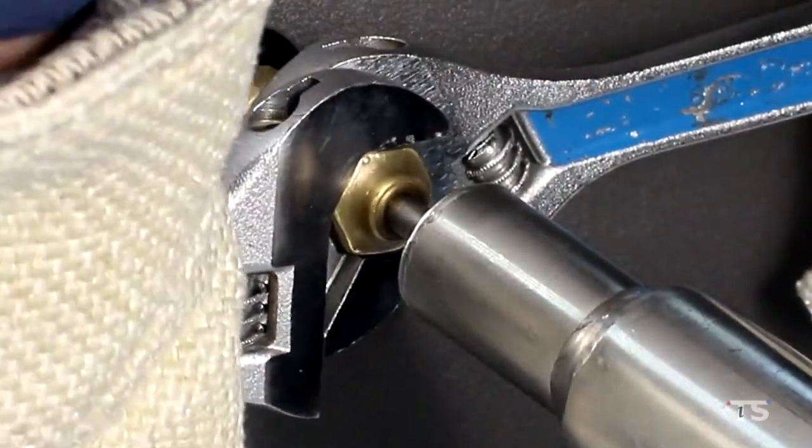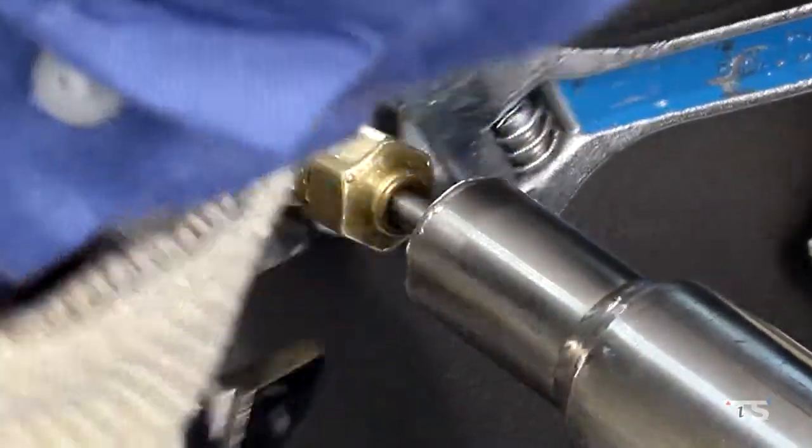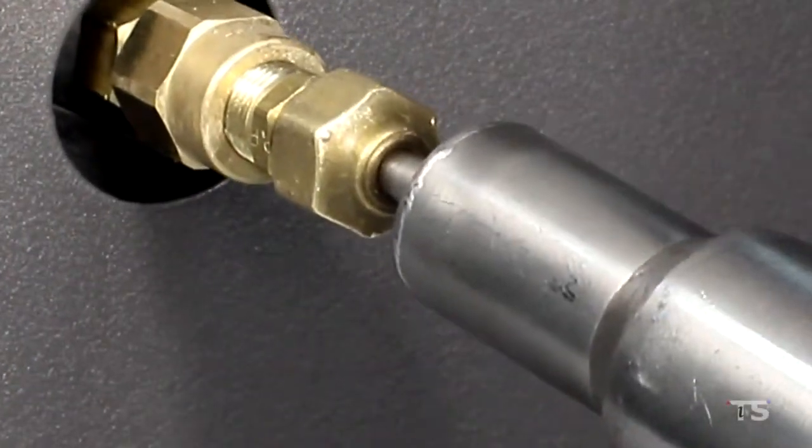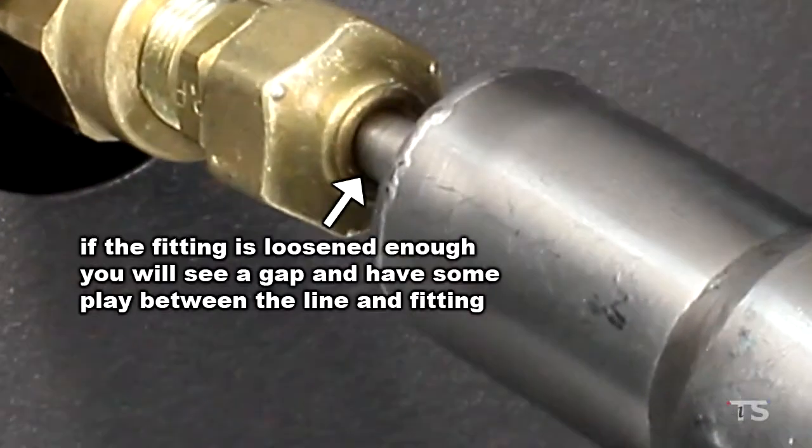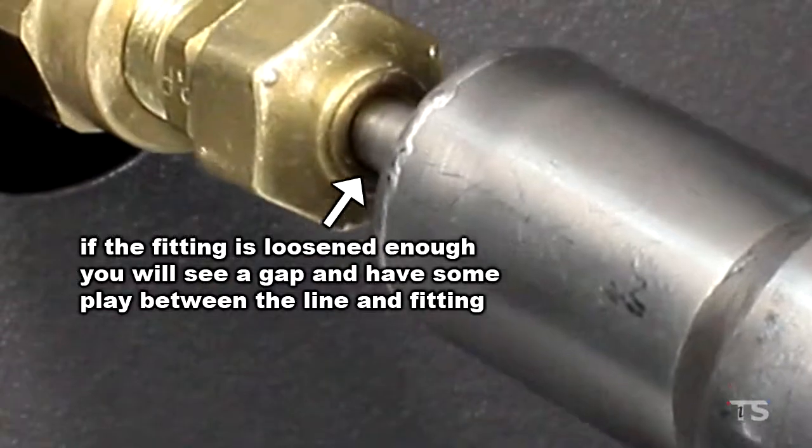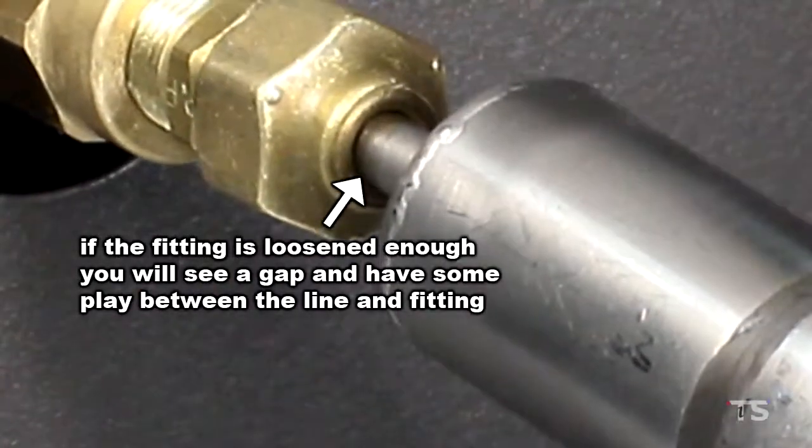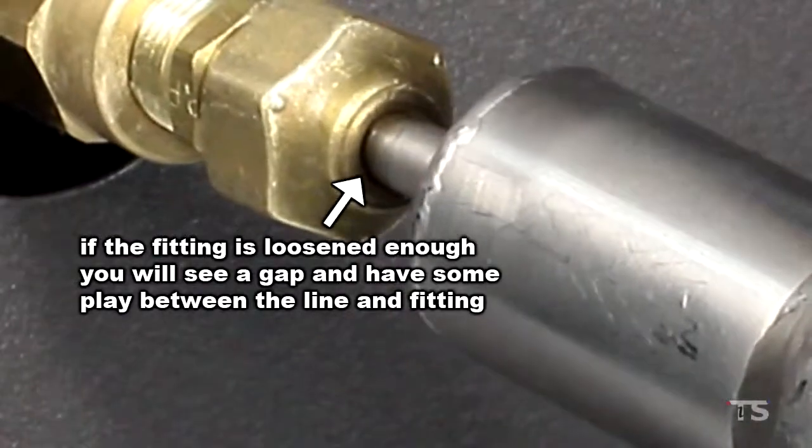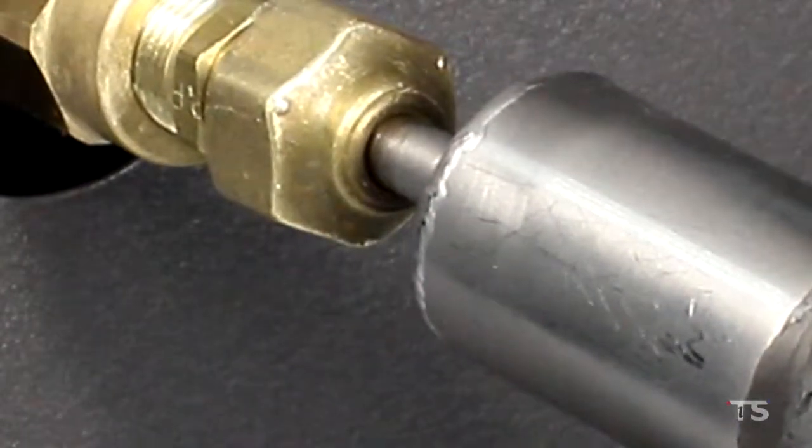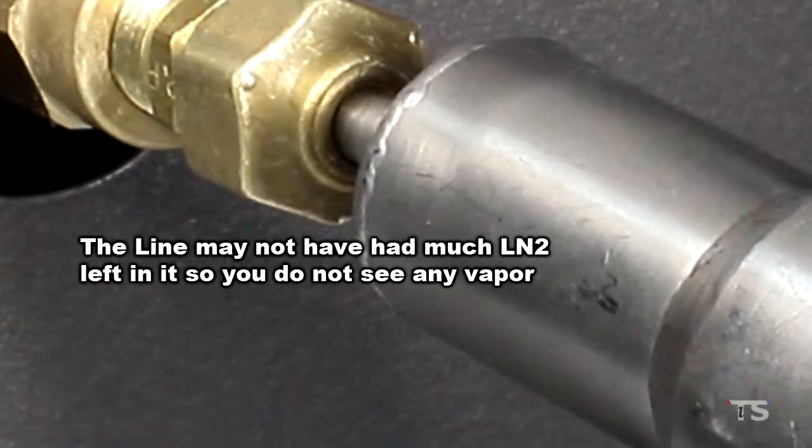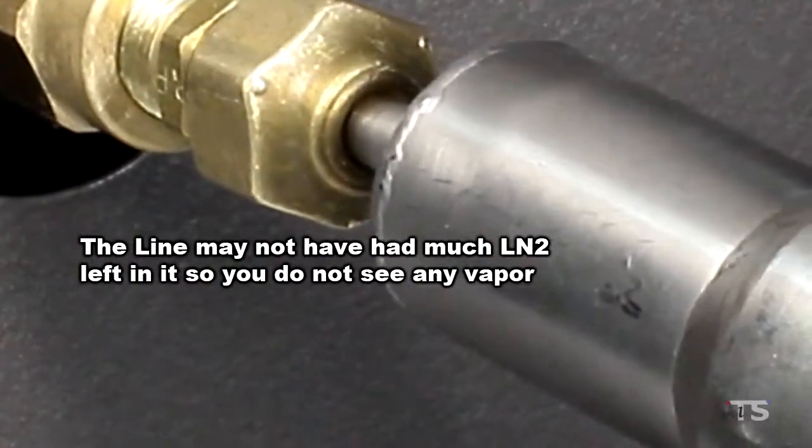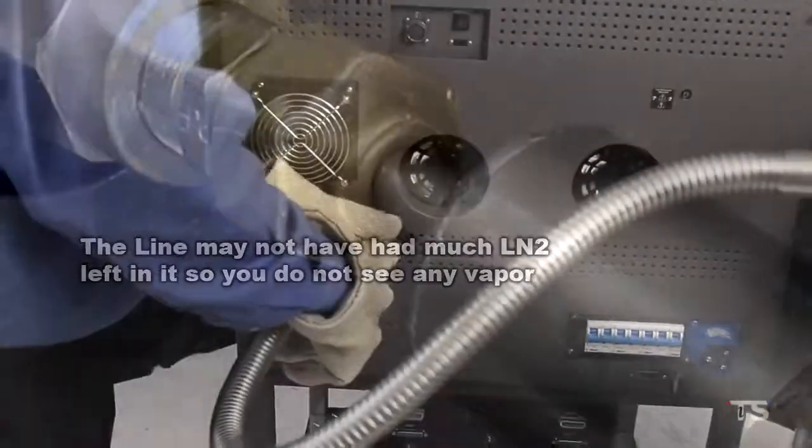If you don't see vapor, that could be okay. Just look carefully at the back of the flare fitting of the delivery line. If this fitting is loosened enough, you will see a gap and have some play between the flare fitting and where the delivery line passes through the fitting. This gap is where the vapor would escape from, and if you see the gap but no vapor, then the line may not have had much LN2 in it to begin with.